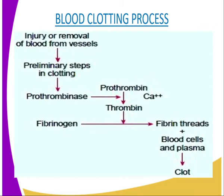The thrombin activates the conversion of the soluble plasma protein fibrinogen to its insoluble form fibrin. Fibrin forms a meshwork of fibers on the cut surface, trapping red blood cells to form a clot. Our diagrammatic representation on screen is trying to summarize the blood clotting process. When the clot dries up, it forms a scab that stops the bleeding and prevents entry of microorganisms.